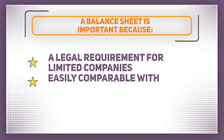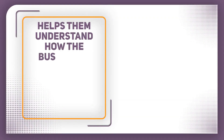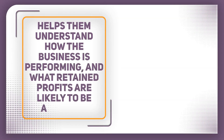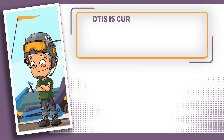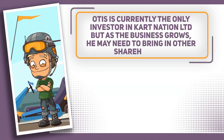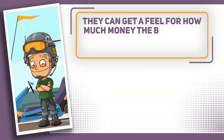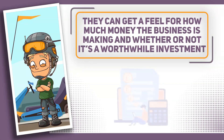Otis can also compare the statement of financial position for this year to a previous year's. It's a useful snapshot of the business's financial health, summarising what it owns, what it owes, and how much it is owed for each year. Reviewing the statement of financial position can be useful for current shareholders of the business to help them understand how the business is performing and what retained profits are likely to be available to them as dividends. Otis is currently the only investor in Kart Nation Limited, but as the business grows he may need to bring in other shareholders. Having easy-to-read financial statements can be a good way to encourage new potential investors, as they can get a feel of how much money the business is making and whether or not it's a worthwhile investment.